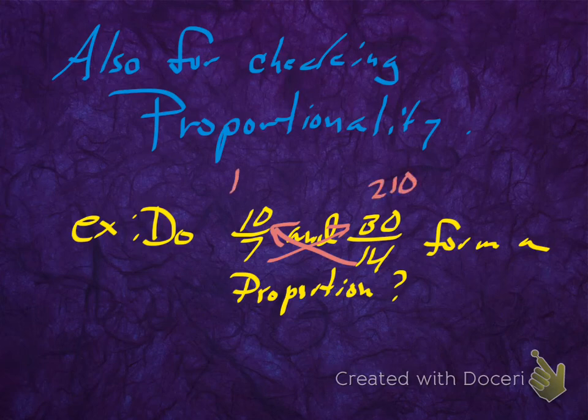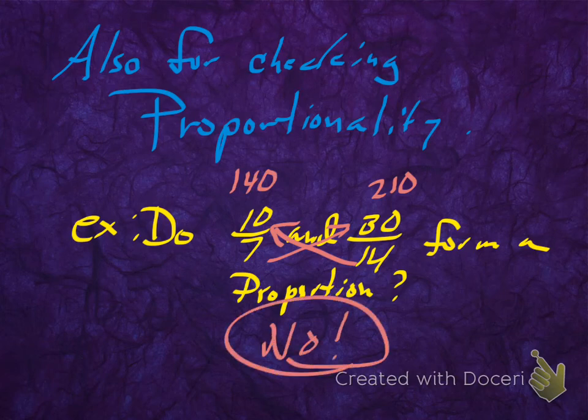So if I multiply 7 times 30, I get 210. If I multiply 14 times 10, I get 140. And so is it a proportion? And clearly in this case, the answer is no. And then when we did these earlier, when we were comparing fractions, we would have said the first fraction is less than the second fraction. In fact, that was the whole reason when we did the crisscross before, we went up instead of down.